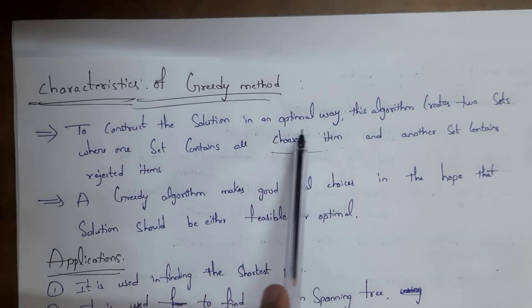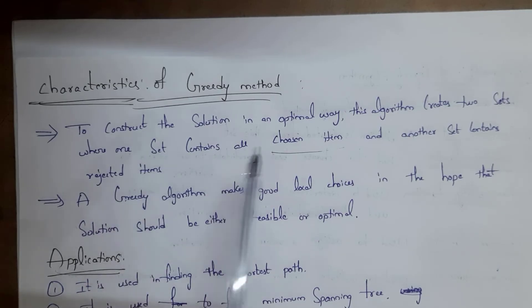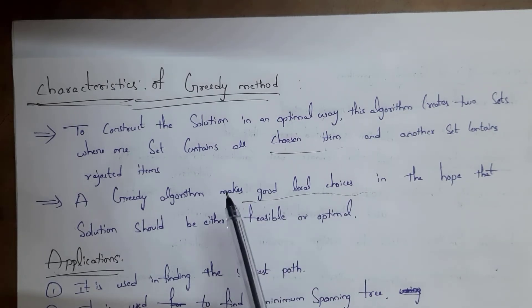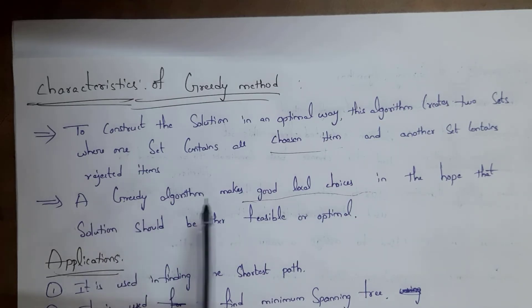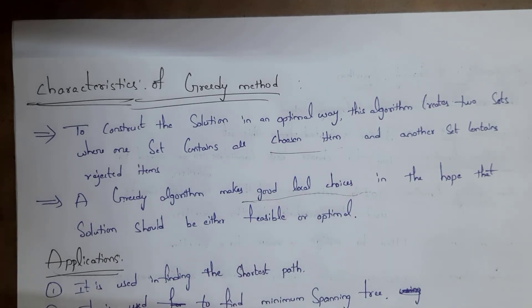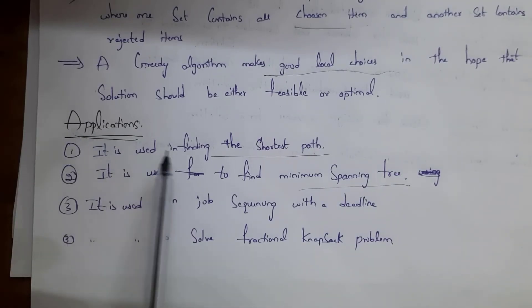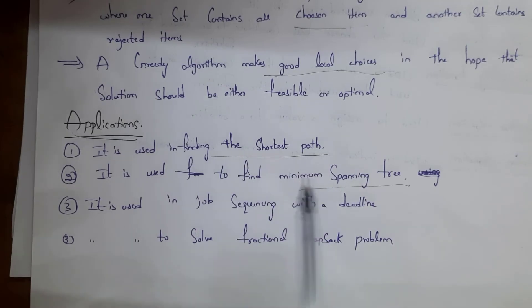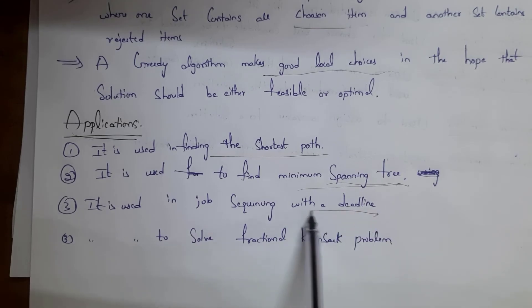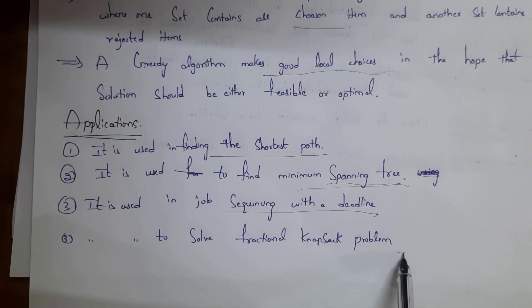Characteristics of greedy method: to construct a solution in an optimal way, this algorithm creates two sets — one set contains all chosen items and another set contains all rejected items. A greedy algorithm makes a good local choice — meaning a decision taken based on present available information — in the hope that the solution will be either feasible or optimal. Applications include: finding the shortest path, finding the minimum spanning tree, solving job sequencing with deadline problems, and solving the fractional knapsack problem.